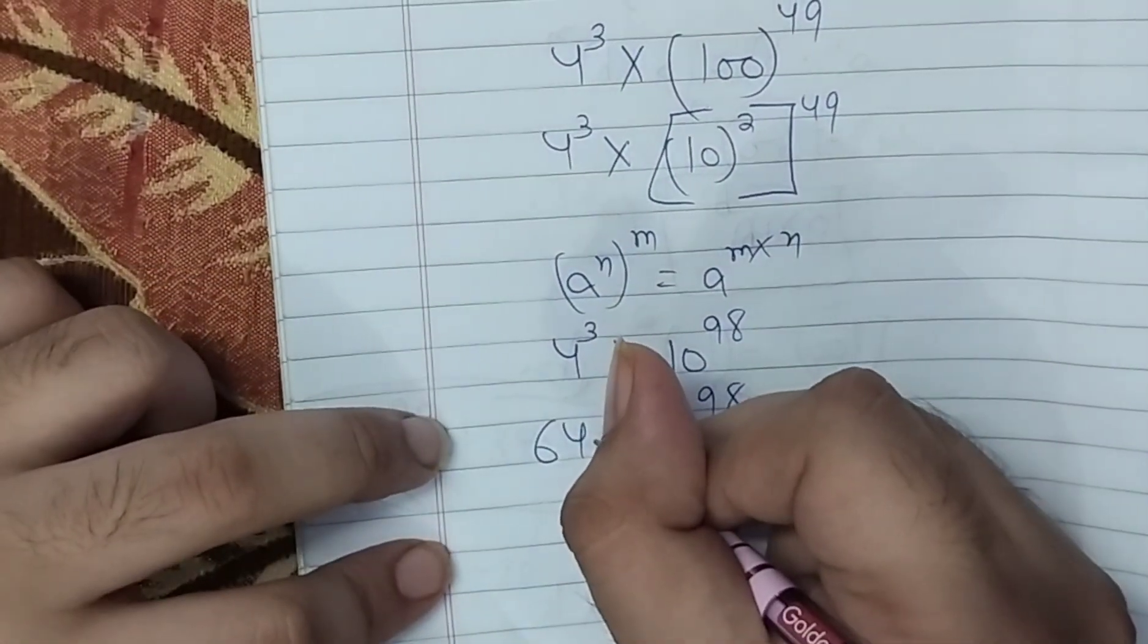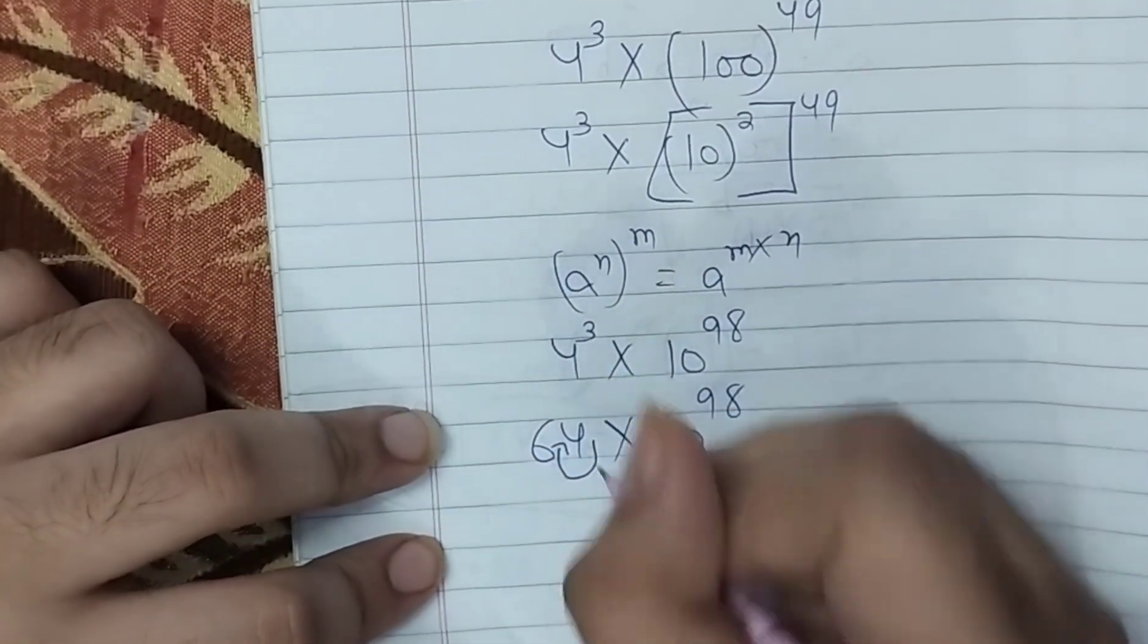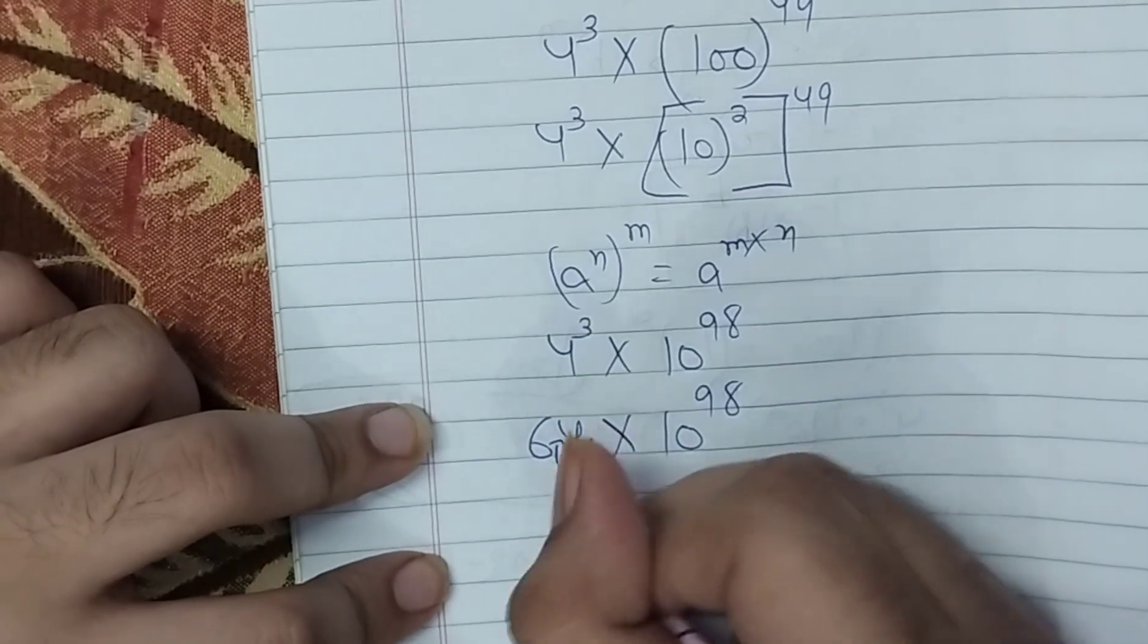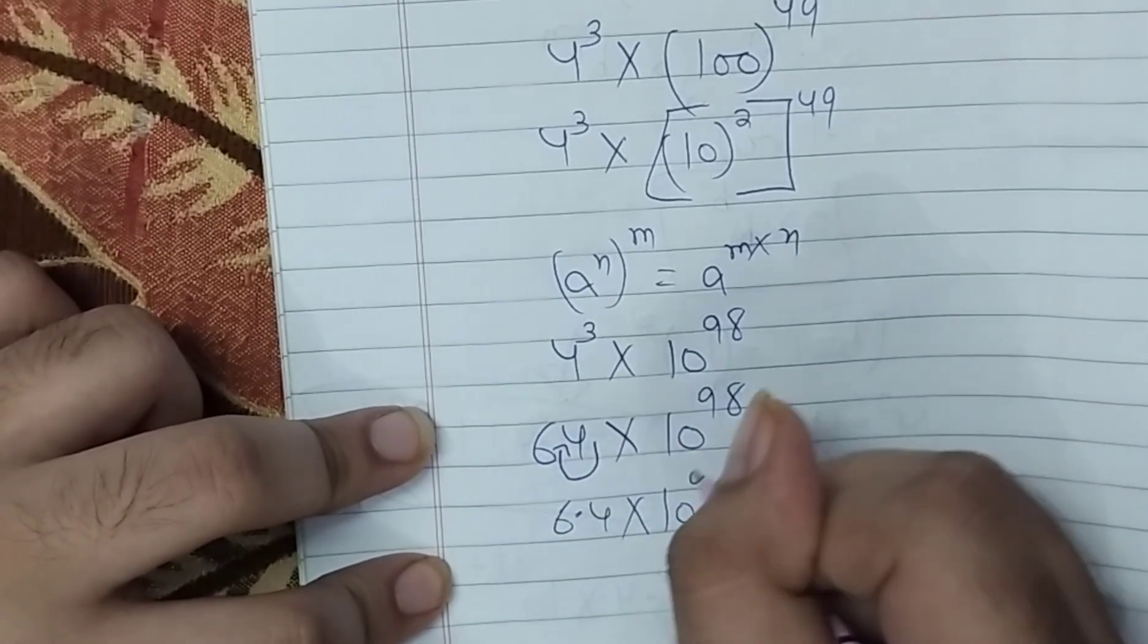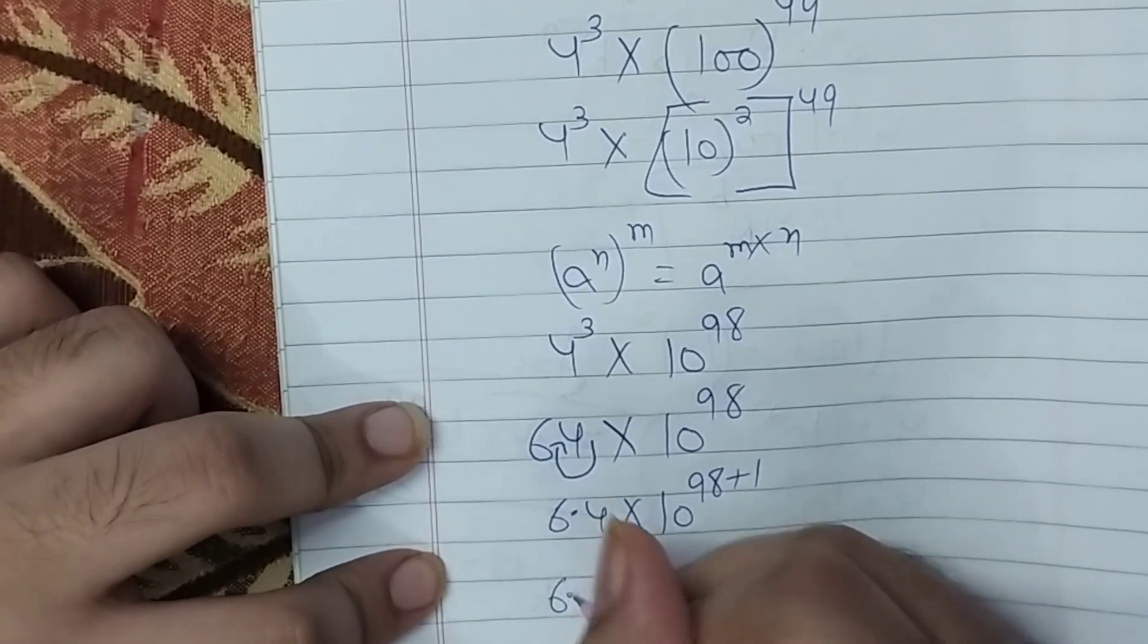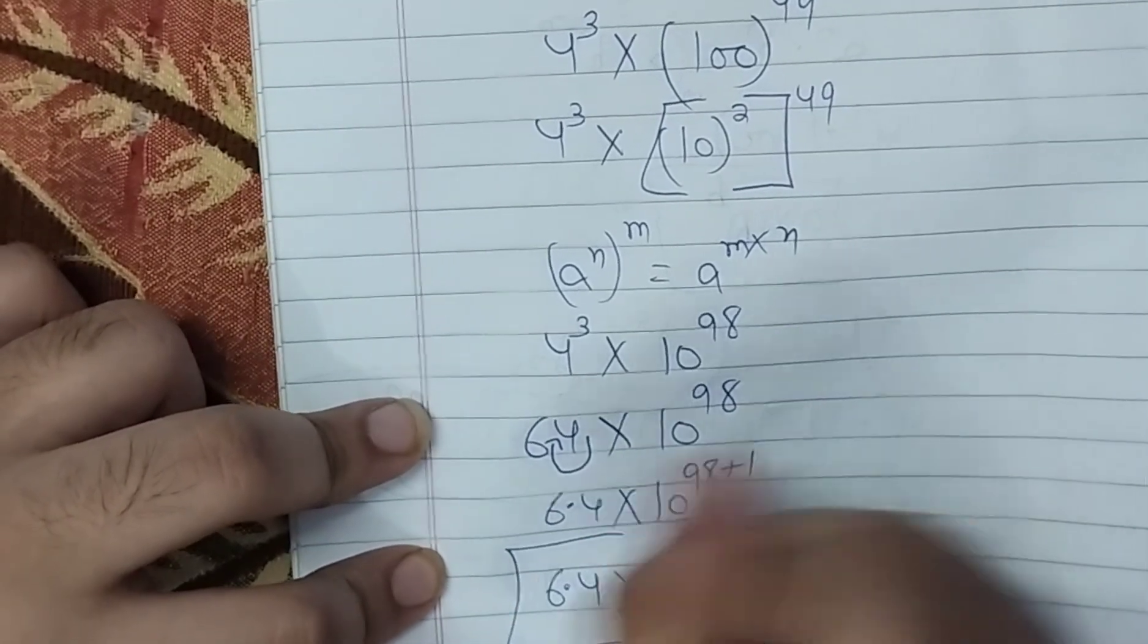What is the point? So here we have 3 points here, we are getting a point. Here we have 1 digit. 10 to power 98 plus 1, 6.4 multiplied by 10 to power 99.